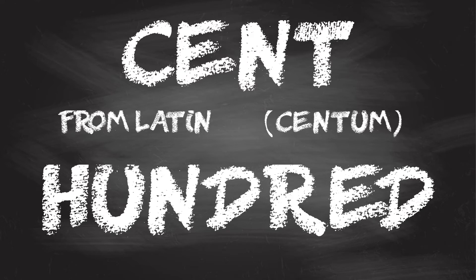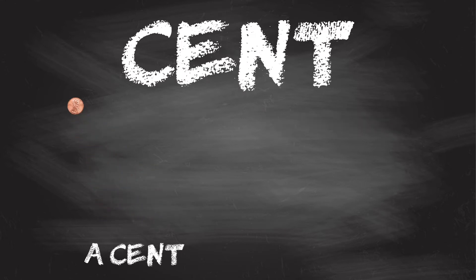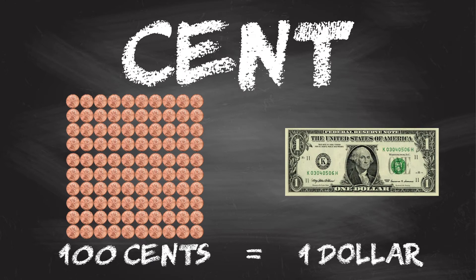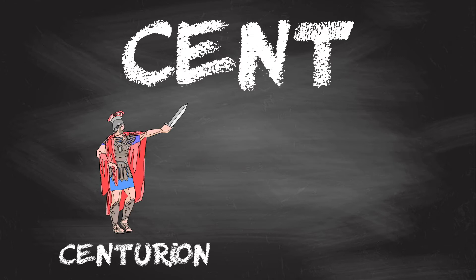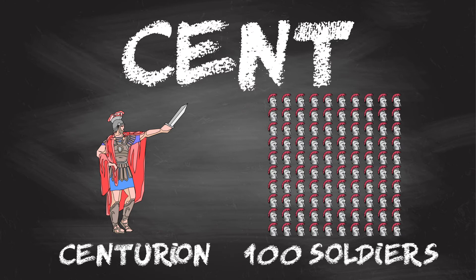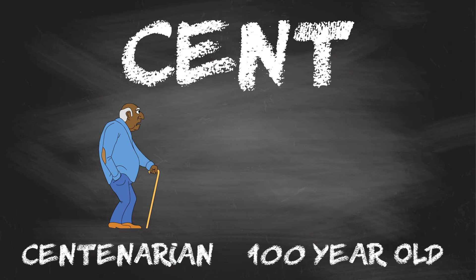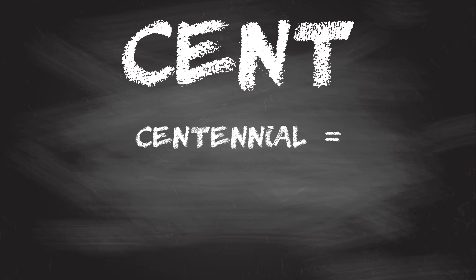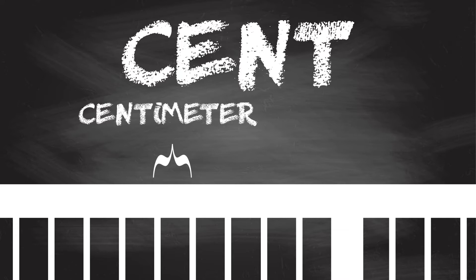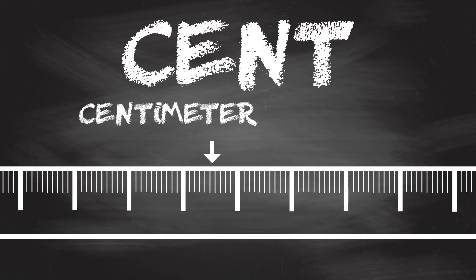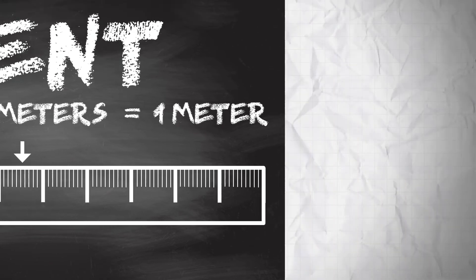There are some modern words based on the Latin centum. Cent — in America, 100 cents makes a dollar. Century is a period of 100 years. Centurion was a military officer of ancient Roman times in command of about 100 soldiers. Centenarian is a person who is 100 years old or older. Centennial is a celebration of the 100th anniversary. A centimeter is a measure of length less than an inch long, and there are 100 centimeters that make up one meter.